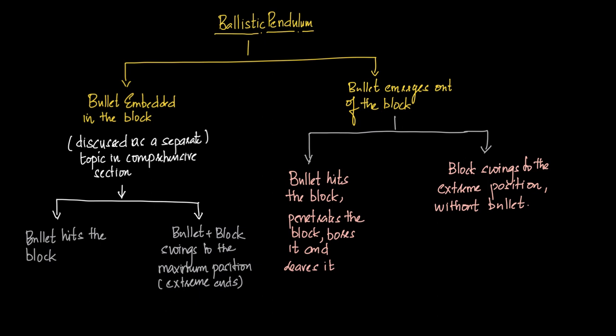So for ballistic pendulum: when embedded — sub-case 1.1 is bullet hitting the block, and 1.2 is the bullet plus block swinging to maximum position. When emerging out — 2.1 is bullet hitting the block, and 2.2 is only the block swinging to the extreme position. I assure you, you will be able to solve any ballistic pendulum question after this discussion.